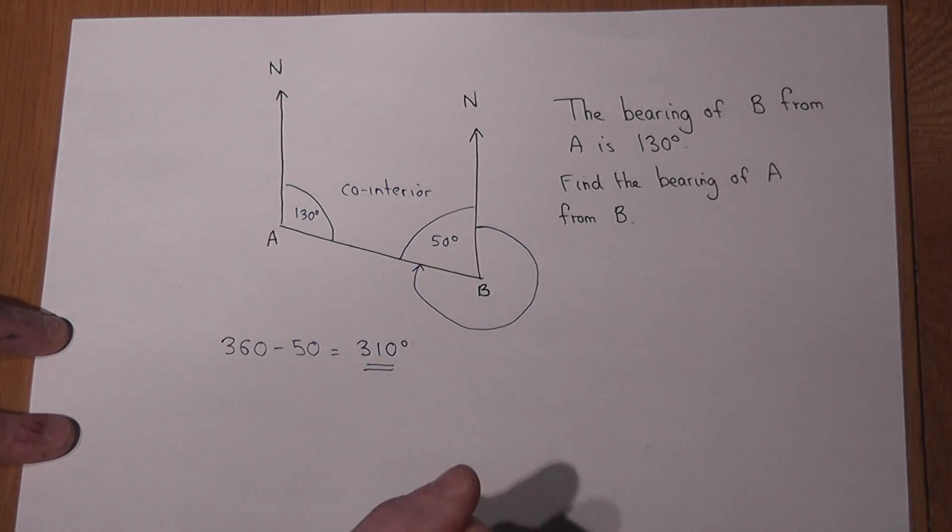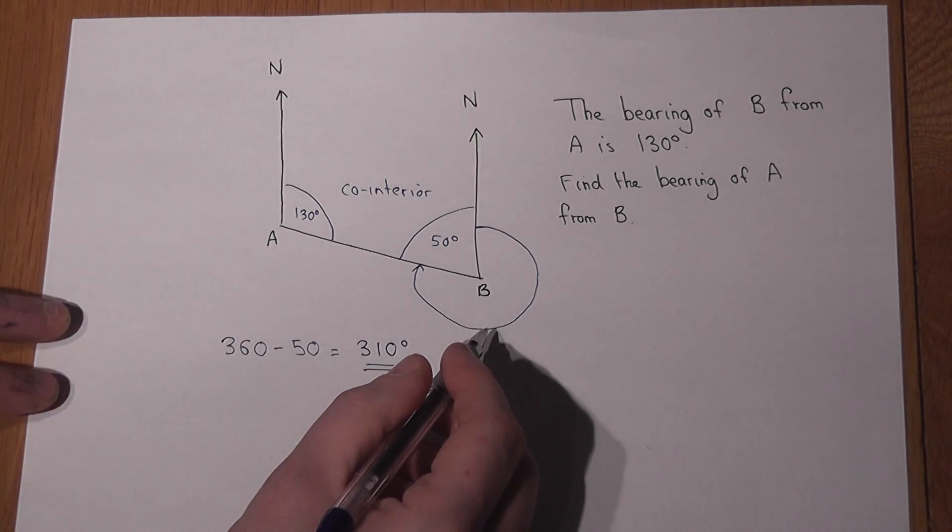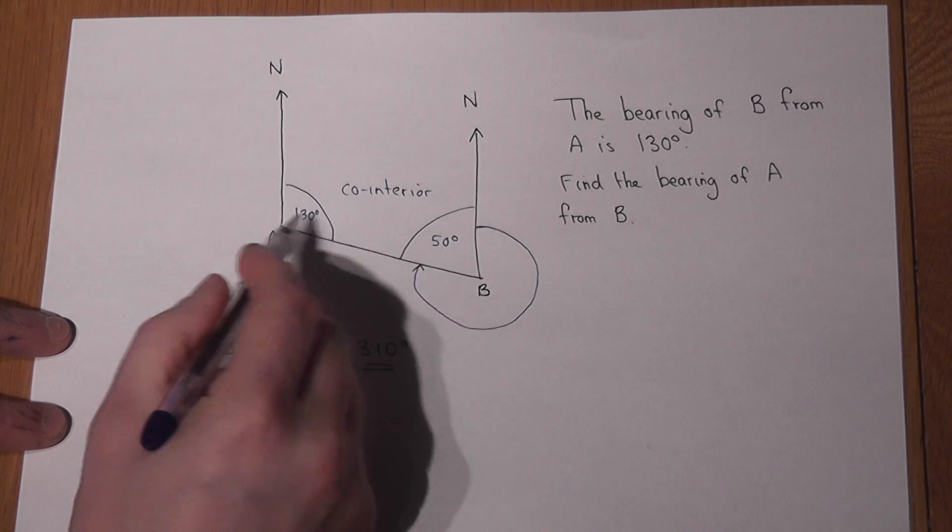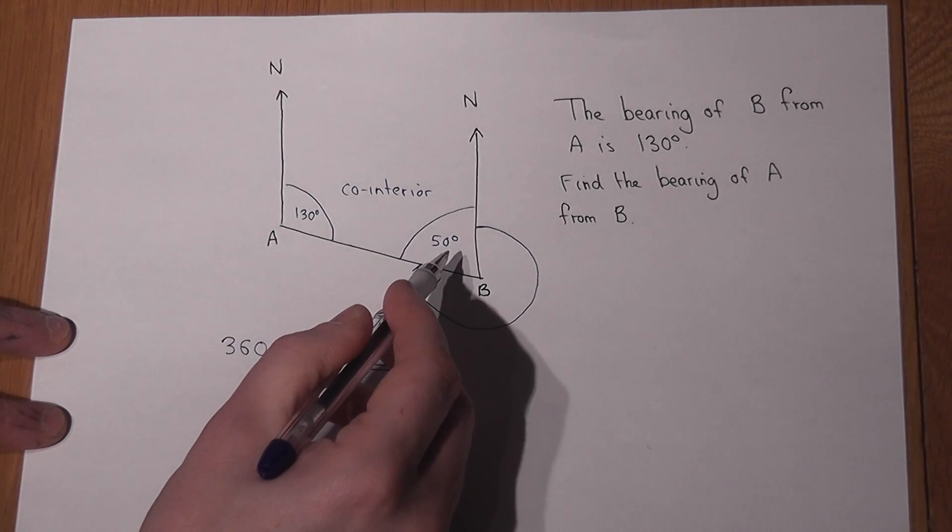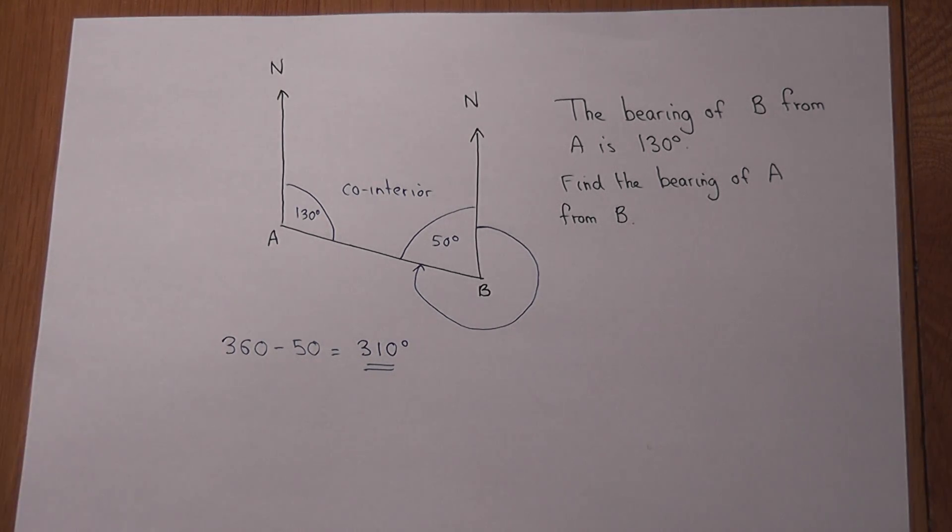So the bearing of A from B is 310 and this simple rule is probably one of the key rules to be aware of for bearing problems.